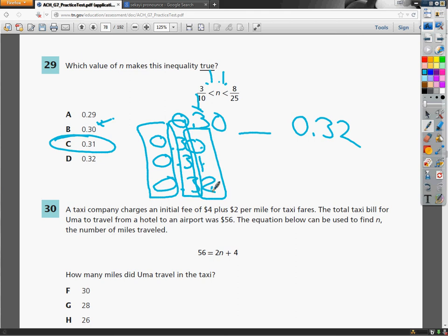So 0.31 is the thing we put in the middle of that statement to show that we can make the inequality true.